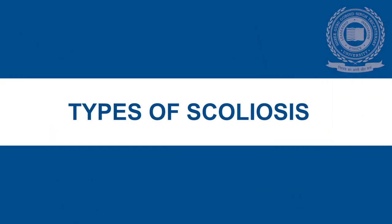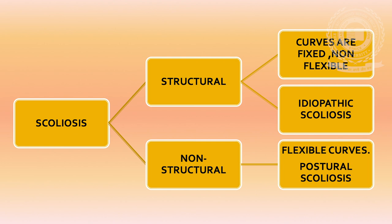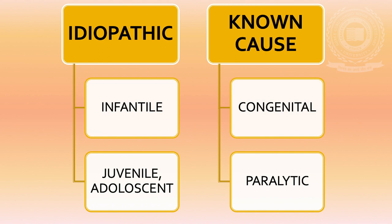Types of scoliosis. Scoliosis can be divided into two types: structural and non-structural. In structural scoliosis, curves are fixed and non-flexible. In non-structural scoliosis, curves are flexible and can be seen as postural scoliosis. Idiopathic scoliosis can be further divided into infantile, juvenile, and adolescent scoliosis. Other known causes include congenital or paralytic scoliosis, which are all types of structural scoliosis.